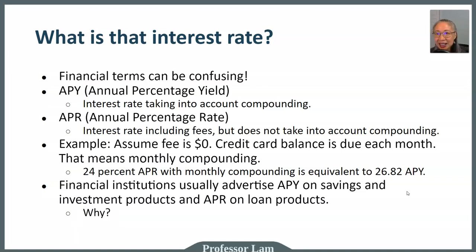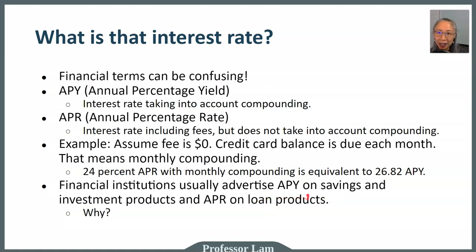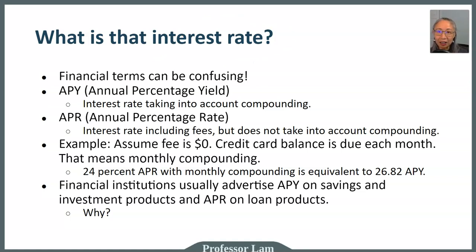Why do you think that is the case? As we said earlier, when compounding occurs more often than once per year, APY will be higher than APR. So when you are offering savings products, you want to show a higher percentage rate to customers. And when you are selling a loan, you want to show the borrower a slightly lower percentage rate. Both are accurate representations of the interest rate, but they have different definitions and represent different information.